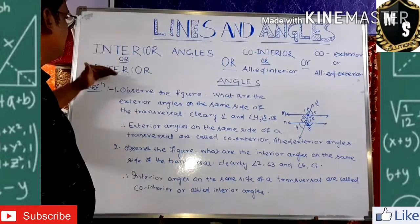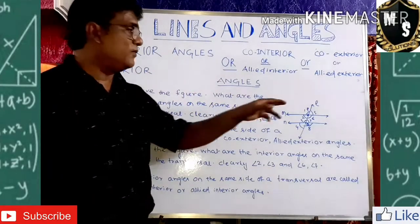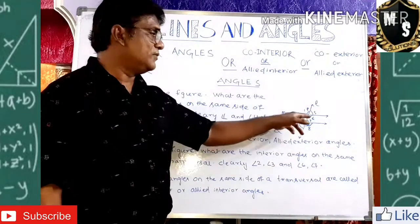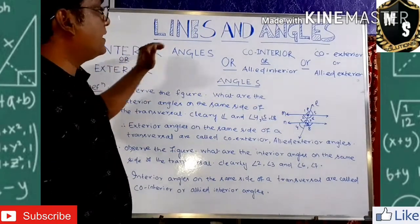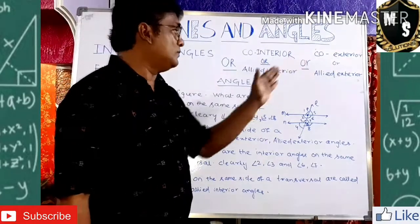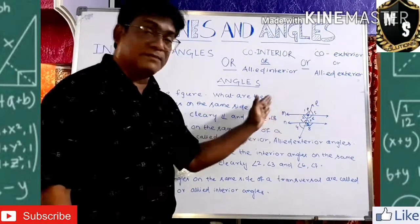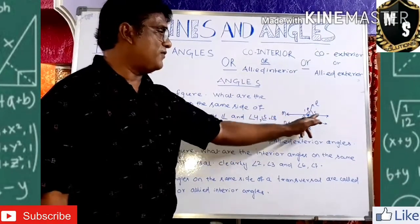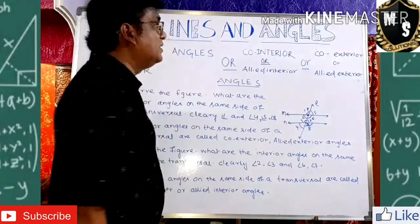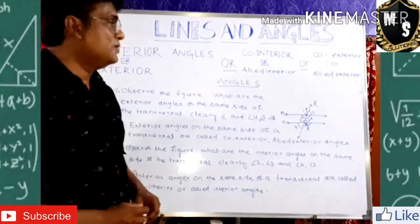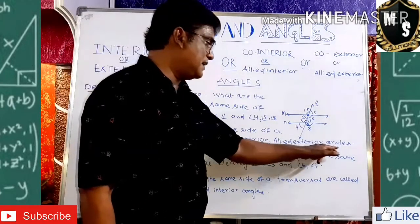Interior angles are 2, 3, 6, and 7. Angles 2 and 3 are on the same side of the transversal, so they are called co-interior or allied interior angles. Angles 6 and 7 are also on the same side on the right-hand side, so they too are called co-interior or allied interior angles. Therefore, angles 2 and 3 and angles 6 and 7 are co-interior or allied interior angle pairs, while angles 1 and 4 and angles 5 and 8 are co-exterior or allied exterior angle pairs.